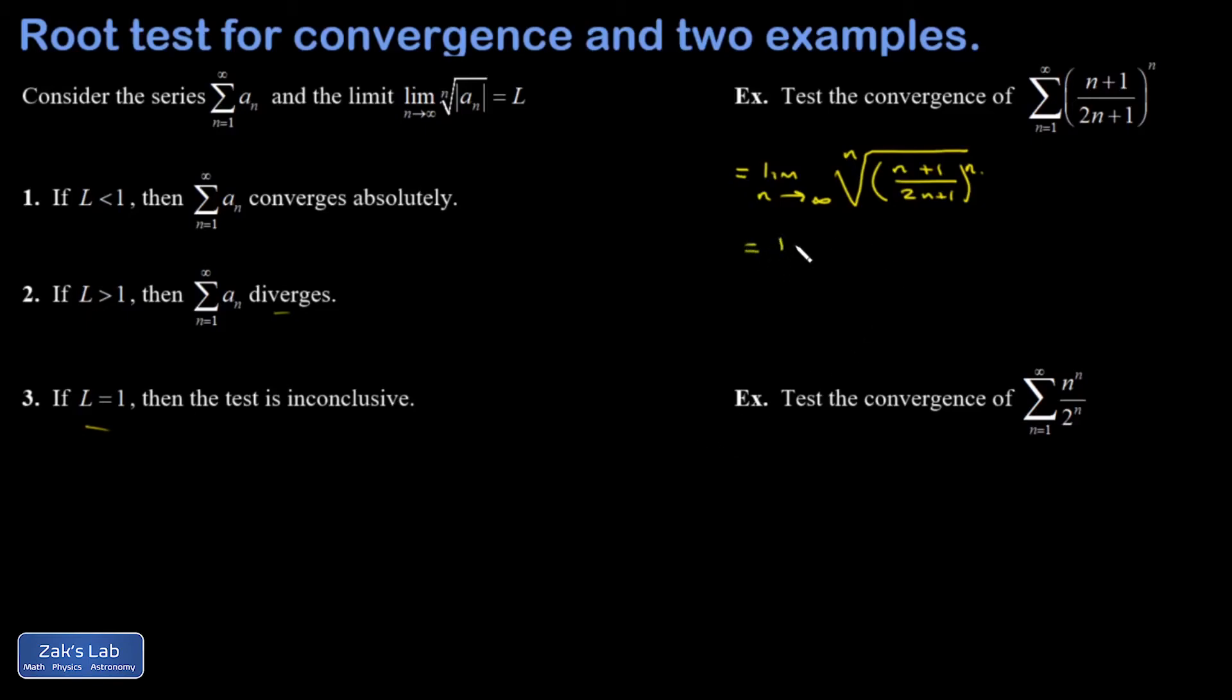So I'm left with just the limit as n goes to infinity of (n+1)/(2n+1). If I treat this somewhat formally, I could divide the top and bottom by n. And that would give me (1 + 1/n) over (2 + 1/n). And 1/n unambiguously goes to 0, so I'm left with just 1/2.